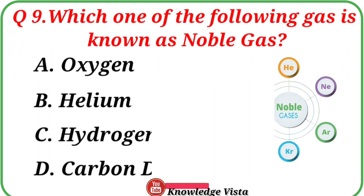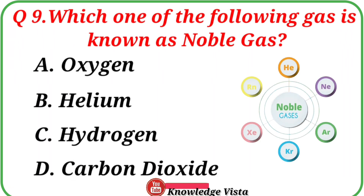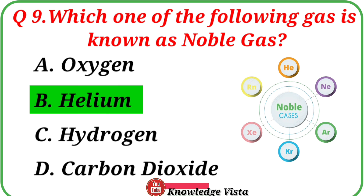Question number nine: Which one of the following gases is known as a noble gas? Option A: Oxygen, B: Helium, C: Hydrogen, D: Carbon Dioxide. Correct answer is option B: Helium.